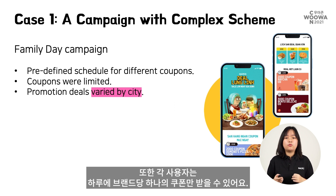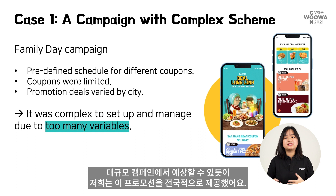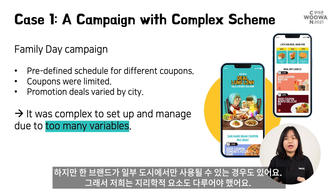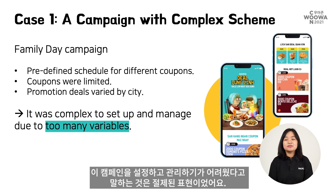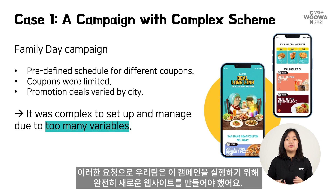Moreover, each user could claim only one coupon per brand per day. This limitation created a strong reaction and interaction from users on our platform. As expected from a large campaign, we offered this promotion nationwide, so users in different cities had coupons from different merchants to claim. A brand could be available only in some cities, so we had to handle the geography factor as well. It was an understatement to say this campaign was difficult to set up and manage — we handled many variables such as geography, time frames, coupons, and other constraints. With this request, our team had to build a whole new website just to run this campaign.